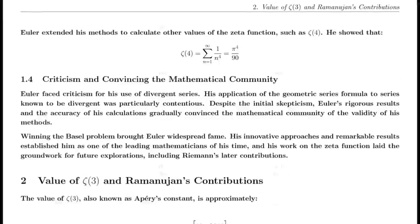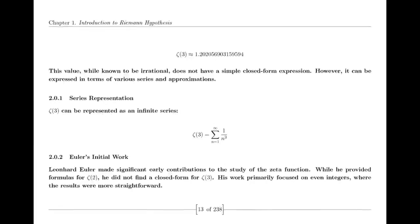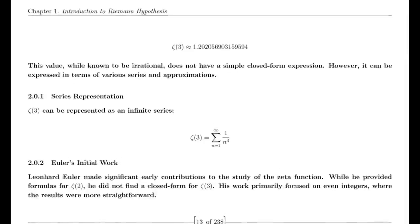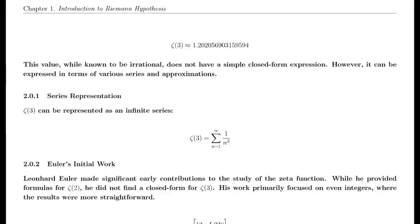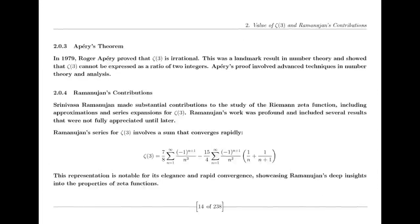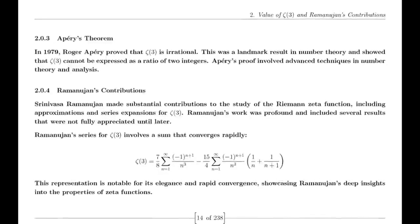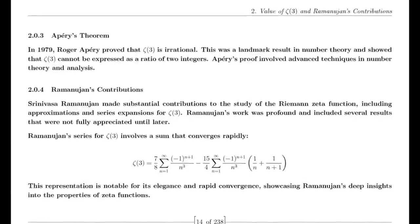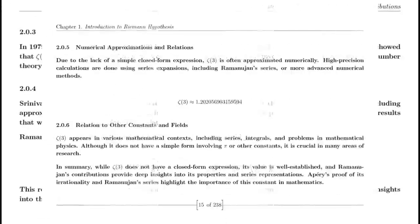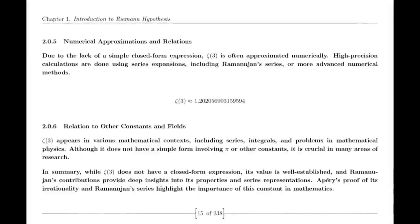In 1859, Riemann published his seminal paper on the distribution of prime numbers, which introduced the zeta function and laid the groundwork for modern analytic number theory. This paper was a milestone in mathematical history and has had a lasting impact on the field, influencing subsequent research and discoveries.